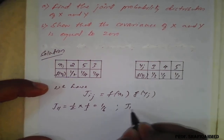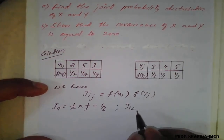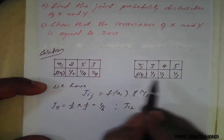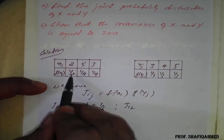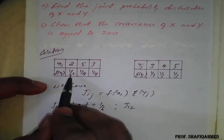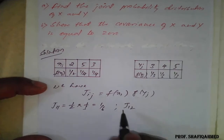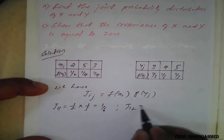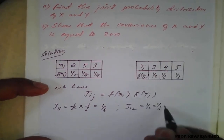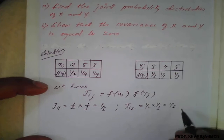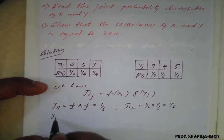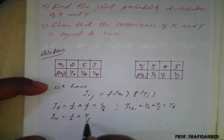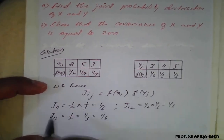Similarly, J(1,2) — first row, second column — is 1/2 × 1/3 = 1/6. And J(1,3) — first row, third column — is again 1/2 × 1/3 = 1/6. So the first row is completed with values 1/6, 1/6, 1/6.